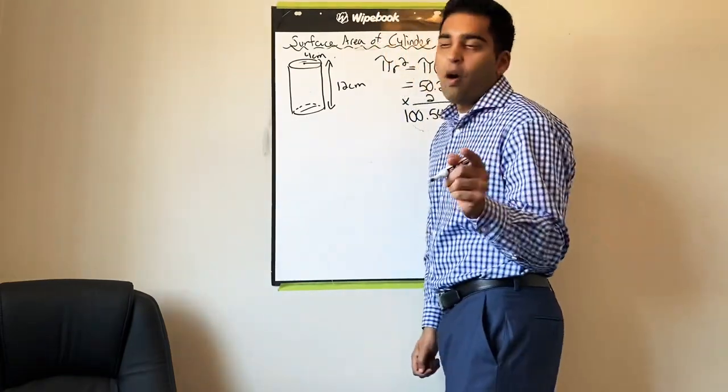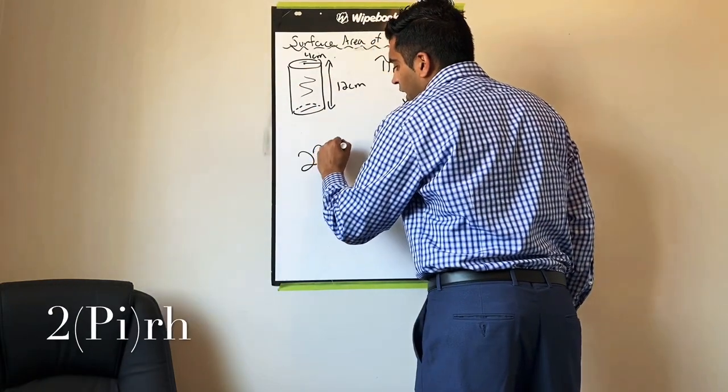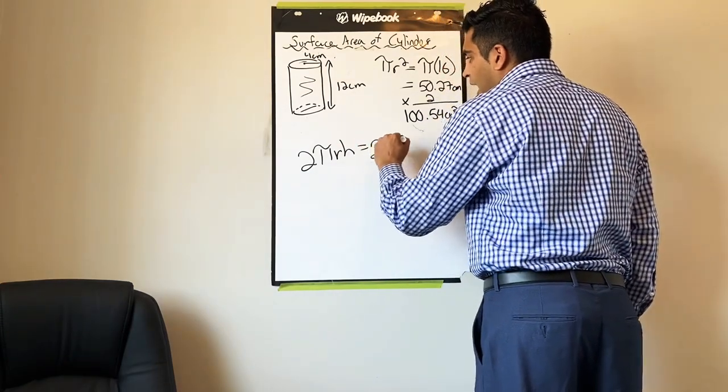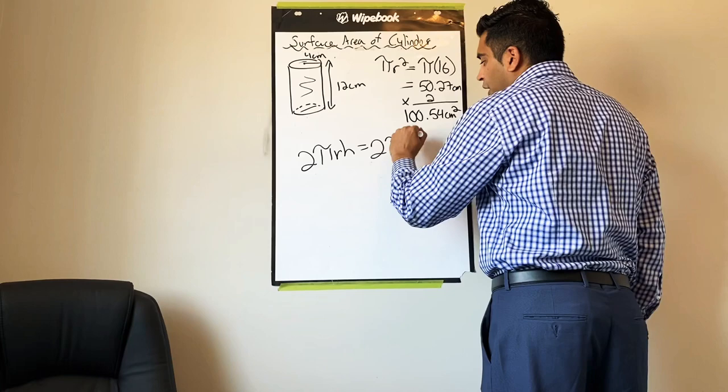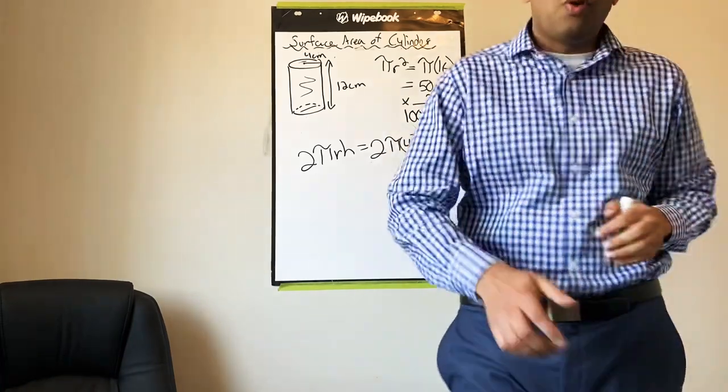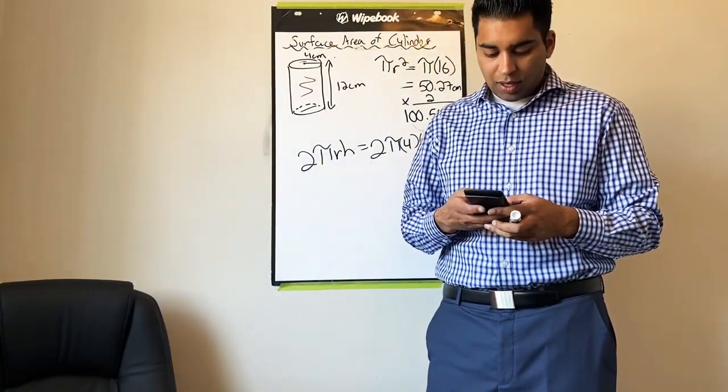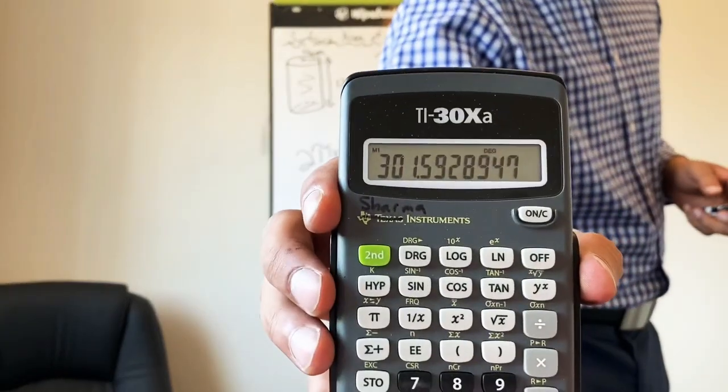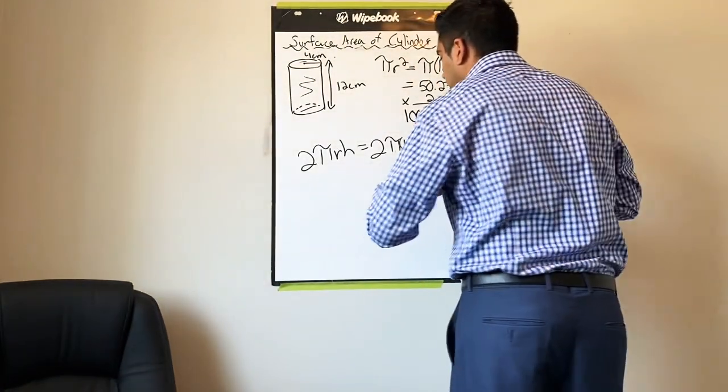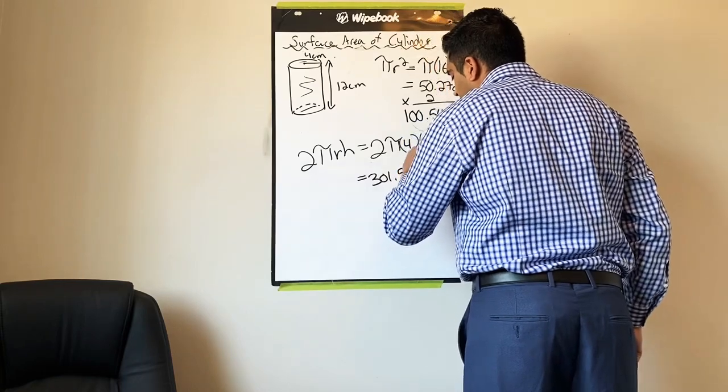The formula for the body of the cylinder is 2 times pi times radius times height, which gives us 2 times pi times 4 times 12. You throw all that into your calculator and you get 301.59 centimeters squared.